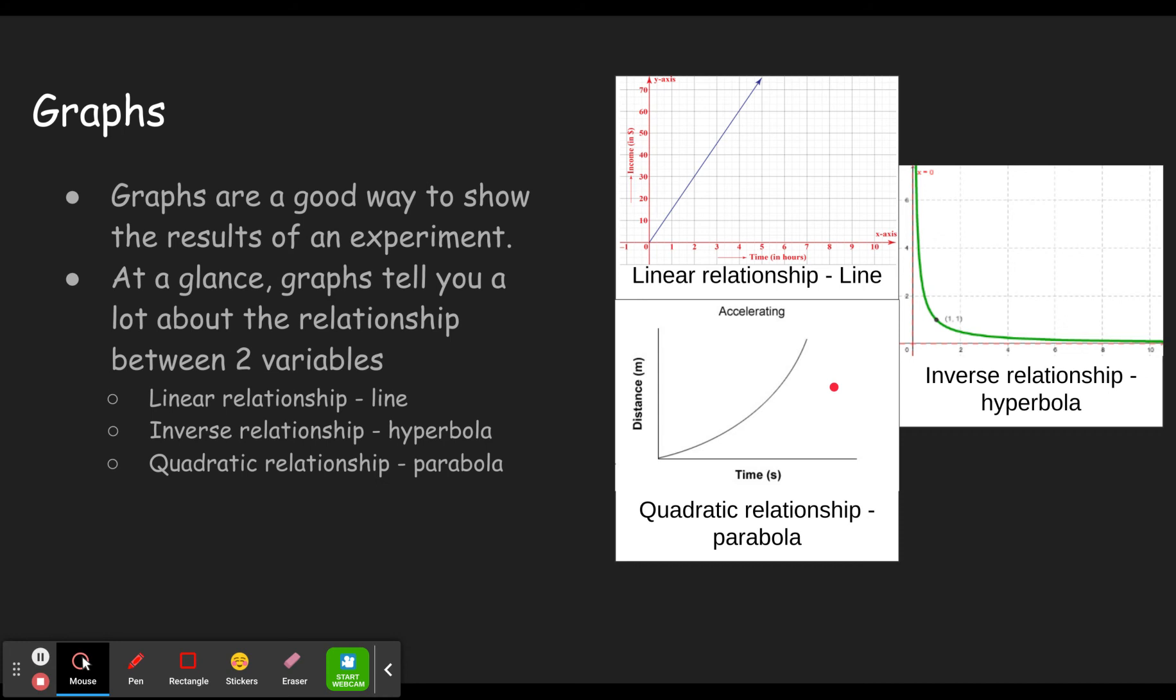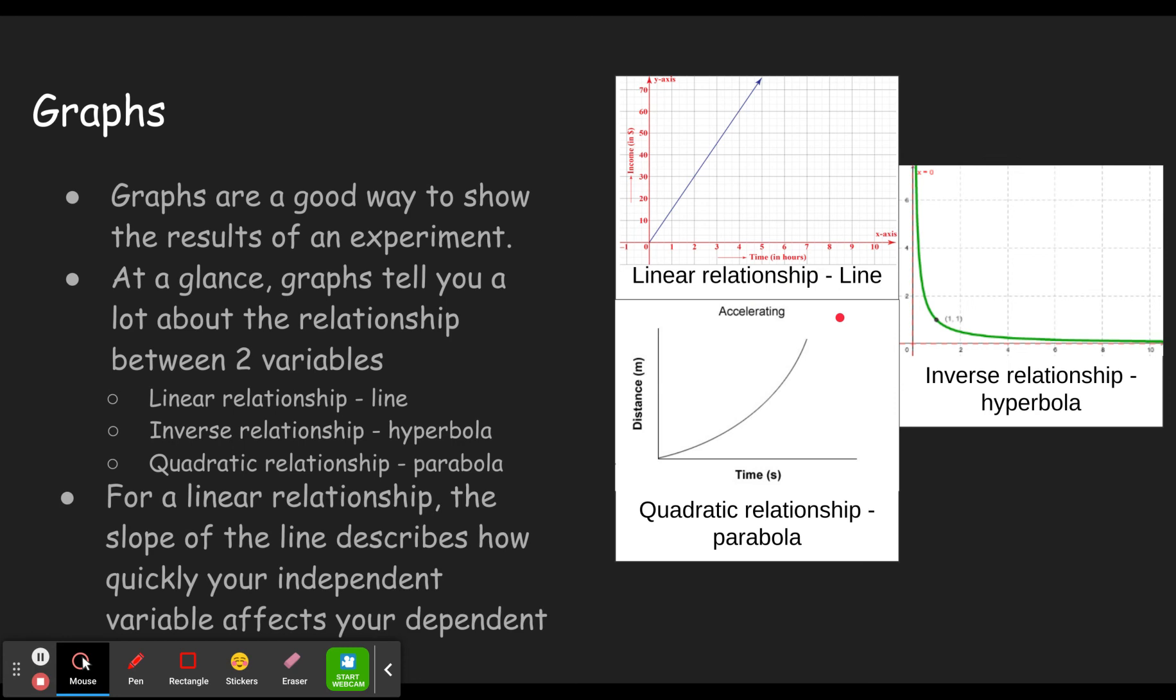So that's just a little bit of background for why we're talking about graphs. Now we're going to be focusing in on the linear graph, because if you have a linear graph, the slope of the line describes how quickly your independent variable affects your dependent variable. So in other words, here we have time and income.